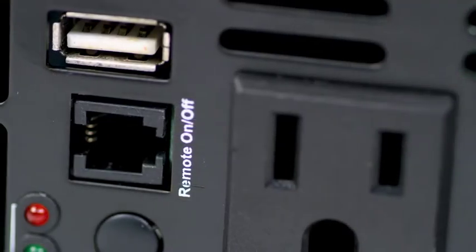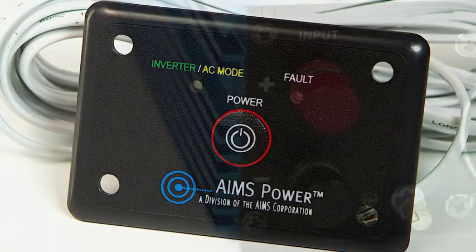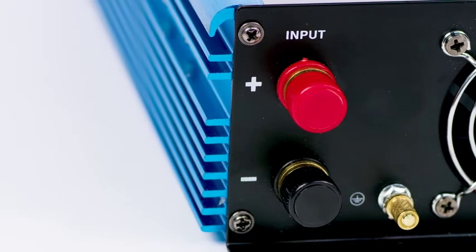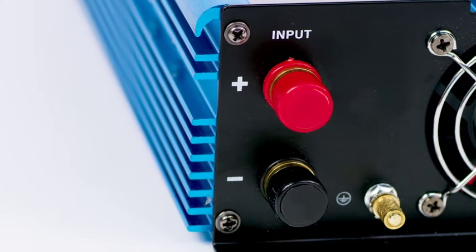You can also purchase an optional on-off remote panel for this inverter. The DC terminals are located on the back of the inverter, one red, one black.